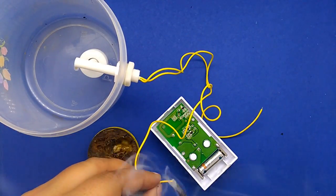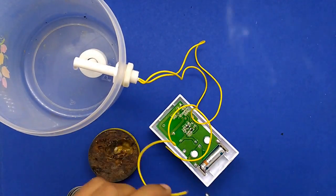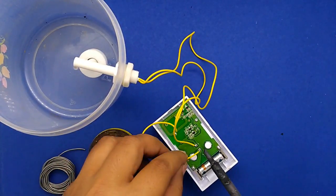Now after attaching the float sensor to the container, you need to solder the two wires of the floating sensor to the transmitter remote of the bell.